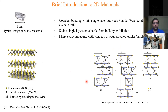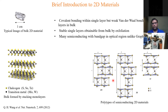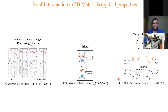These materials can exist in different polytypes depending on their stacking order. For example, in bulk they can be of 2H or 3R polytype. They can also undergo structural phase transitions to a 1T polytype, where the electronic properties change and the material becomes metallic rather than semiconducting.